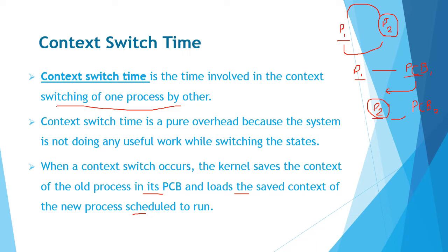So you have two processes, P1 and P2, and you have PCBs — PCB1 and PCB2. The P1 process will move from running to ready state where you have saved context, and the P2 process saved context will be uploaded from PCB2.